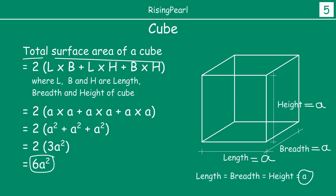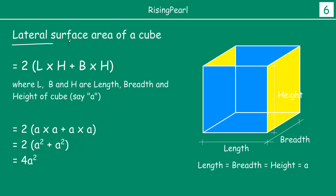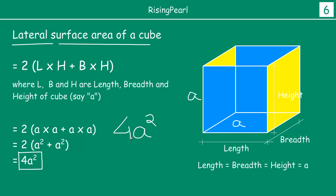For the lateral surface area of a cube, we use the cuboid LSA formula 2(lh + bh) and replace L, H, and B with A, giving us 4A². This is also intuitive: each of the four sides has area A², and since we are looking at 4 sides and not including the top and bottom, the lateral surface area of a cube is 4A².